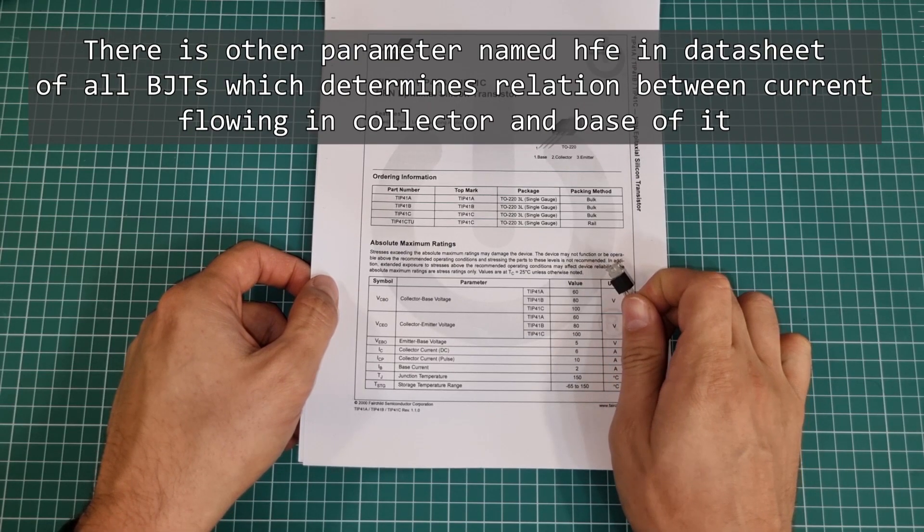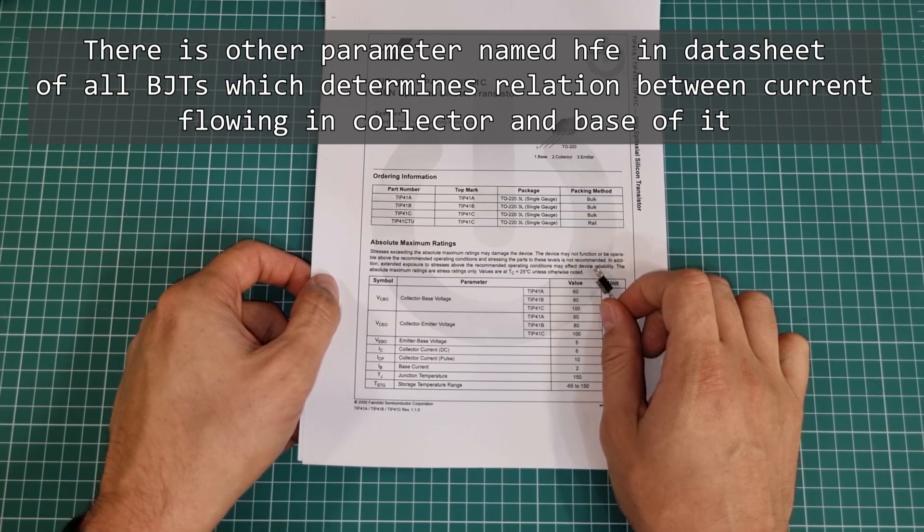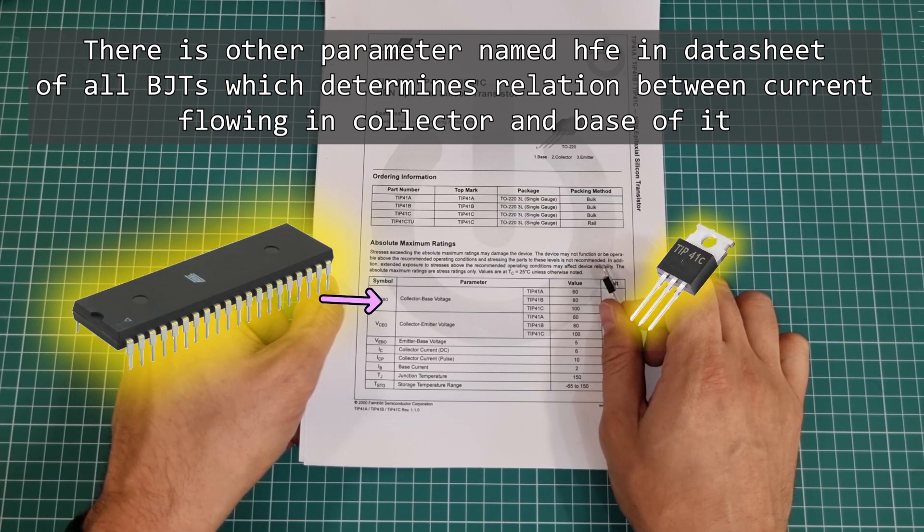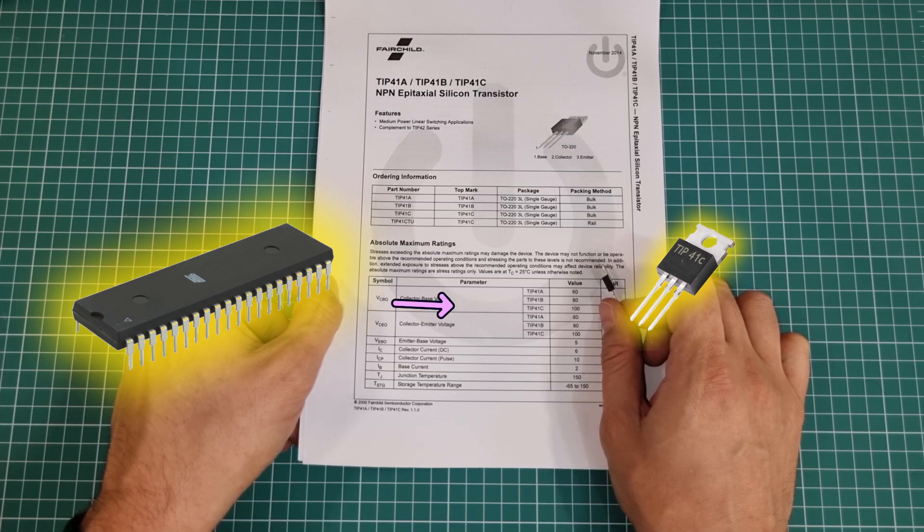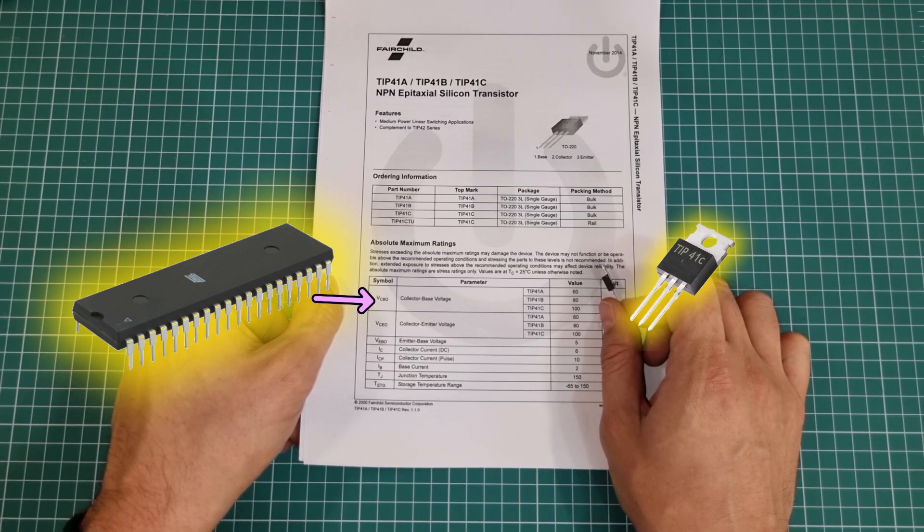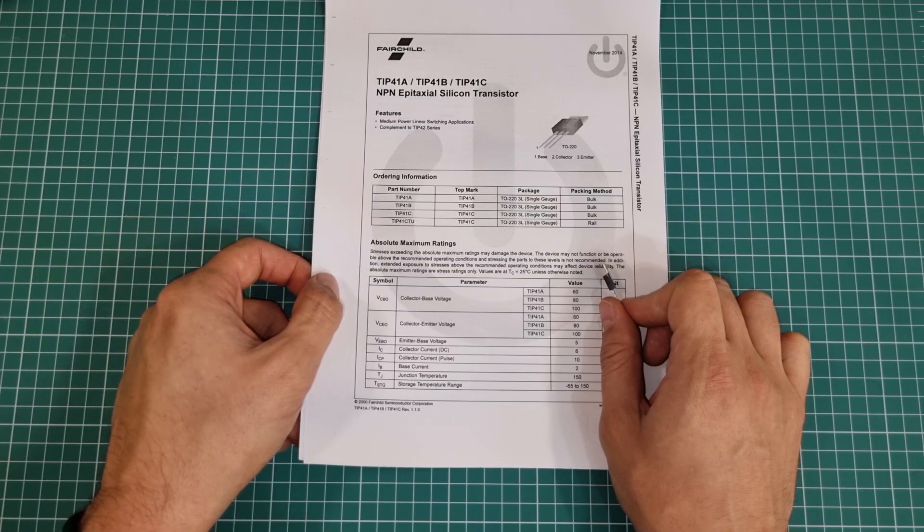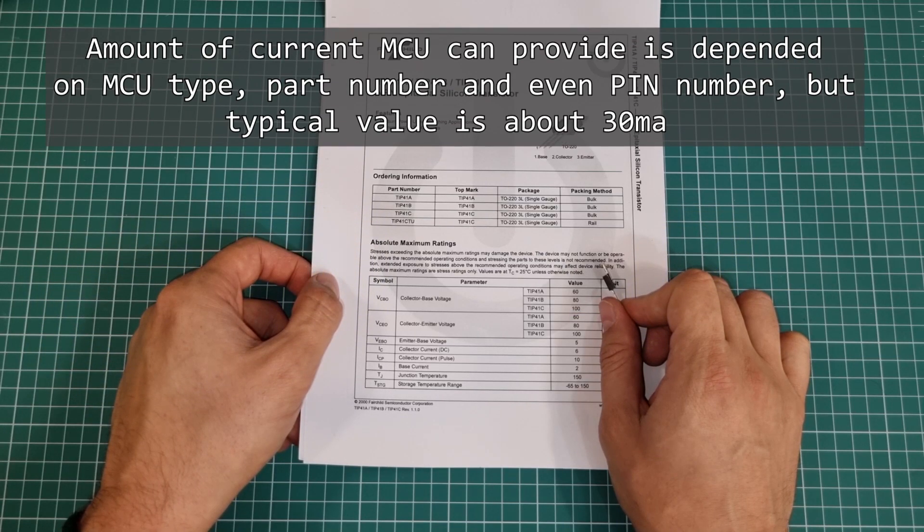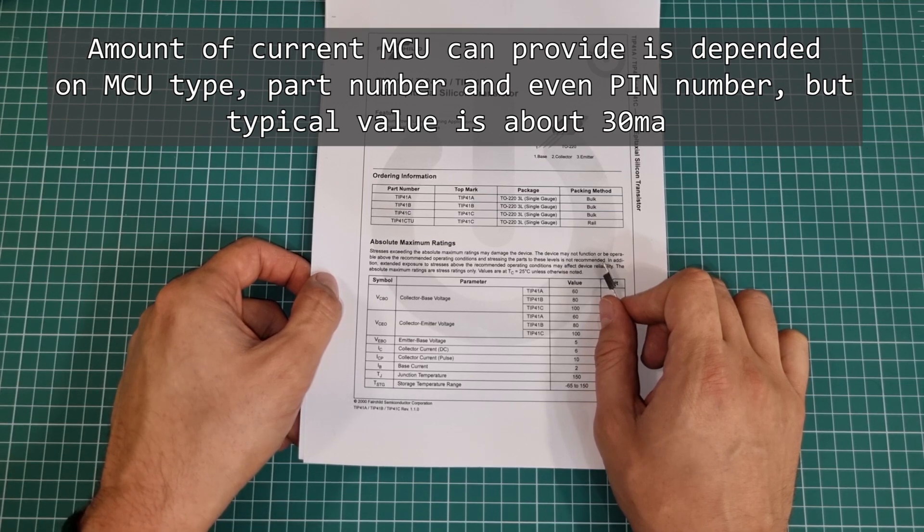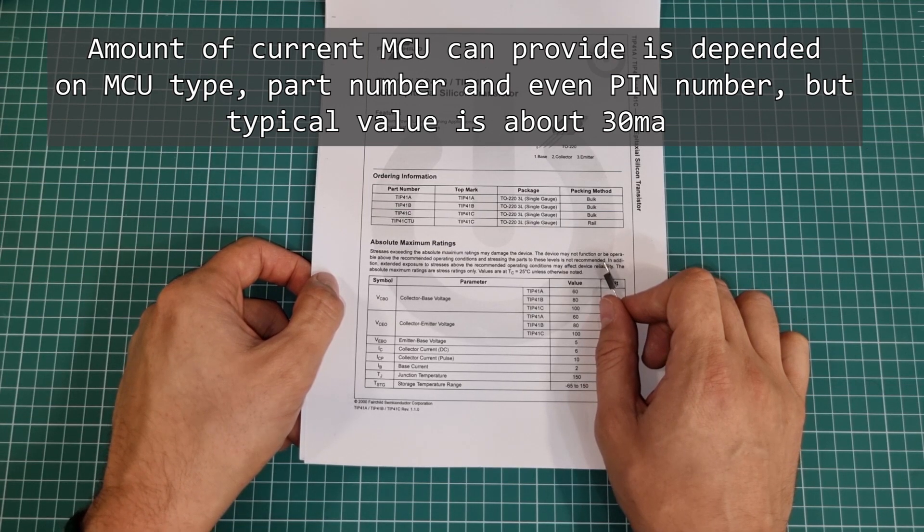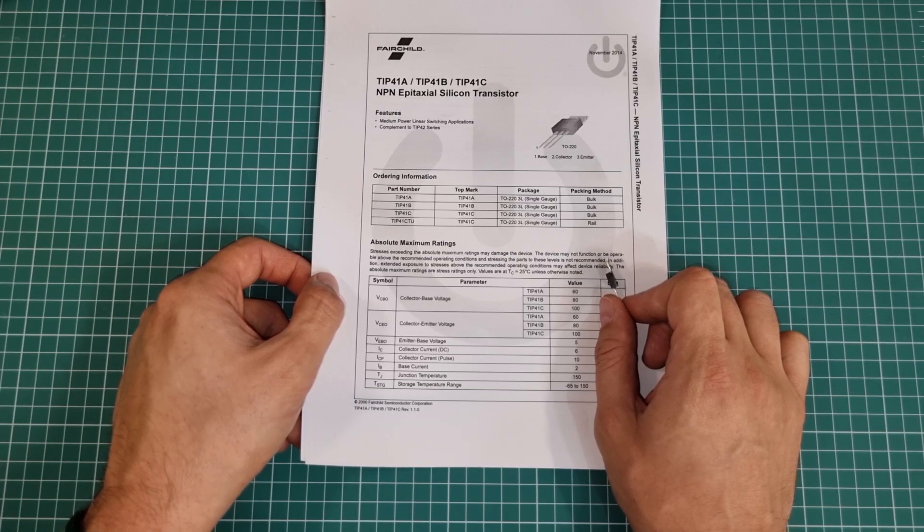In order to turn this transistor on, you need to pass some current to its base pin, and the sensor or microcontroller must be able to provide that current on its GPIO. GPIO pins of microcontrollers can provide a certain amount of current. For example, maximum of 30 milliamps. Some sensors may provide less than 30 milliamps or even about a few microamps.